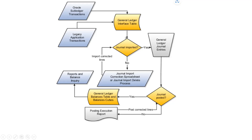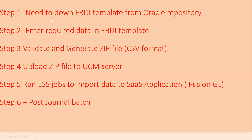This high-level diagram explains how to import journals. The steps to follow are: first, download the FBDI template from the Oracle repository; second, enter the required data in the FBDI template; third, validate and generate a ZIP file in CSV format; fourth, upload the ZIP file to the UCM server (Universal Content Manager); fifth, run the ESS jobs to import data to the Fusion GL application; and finally, post the journals to the GL.